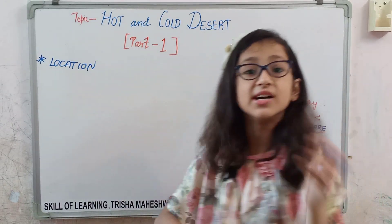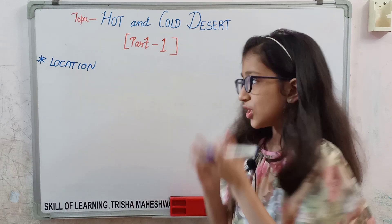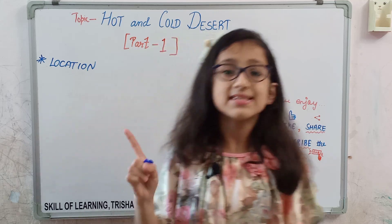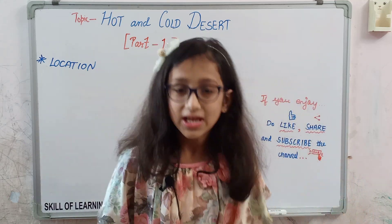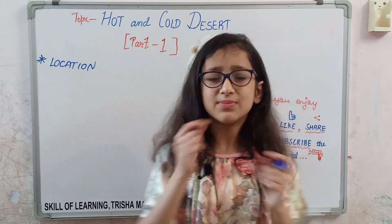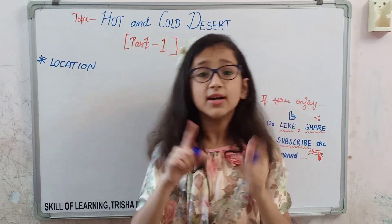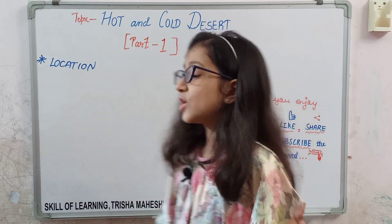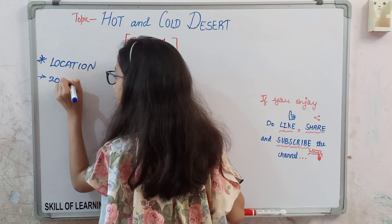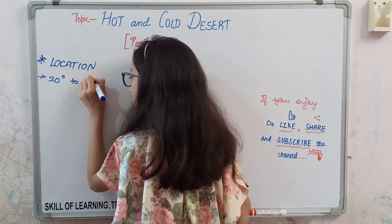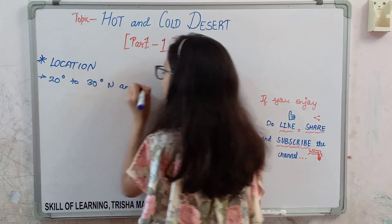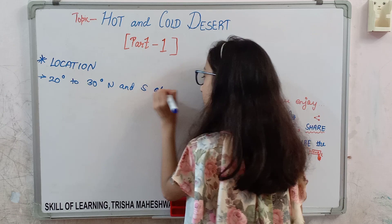Location means where they are situated. Hot deserts are situated 20 degrees to 30 degrees north and south of the equator. 23.5 degrees is the Tropic of Cancer, so around 23 to 30 degrees means it is in the torrid zone. We write: 20 degrees to 30 degrees north and south of the equator.